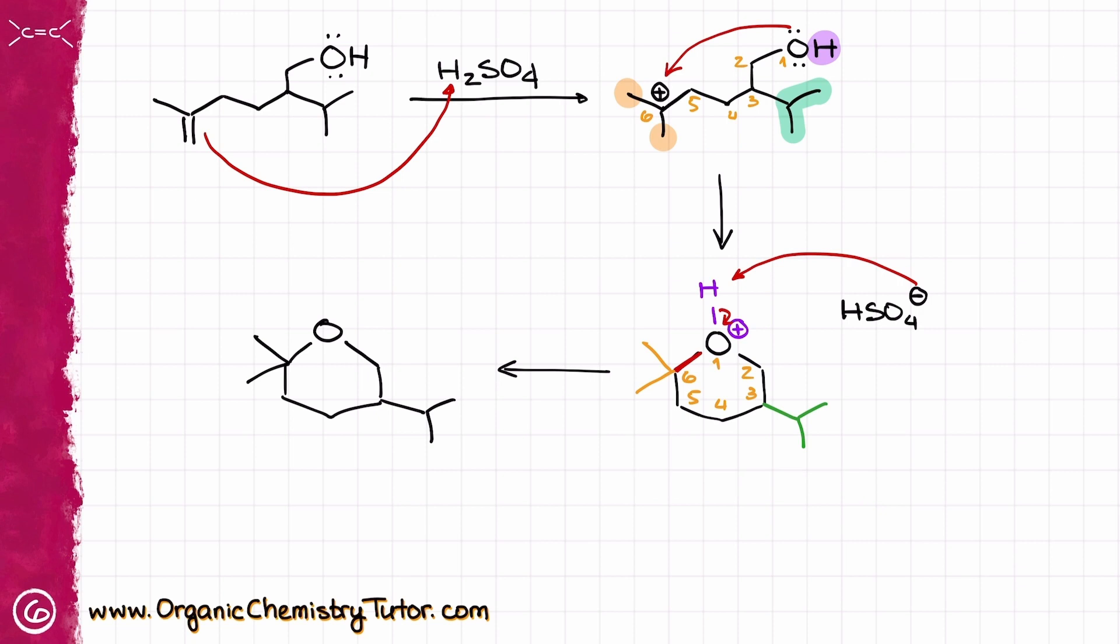But the point here is that whenever you need to draw your cyclic molecule, your cyclic products, always number your atoms first. As I've mentioned before, I personally prefer to number from the nucleophile to my electrophile, draw the stem for the molecule with the number of atoms that you need to have there, then number them, and then dress your molecule up with other groups that you might have on the molecule. And this way you are going to get the correct cyclic product every single time.